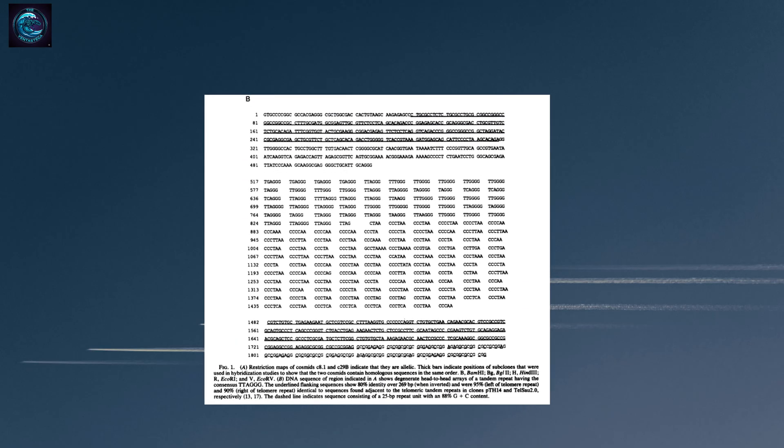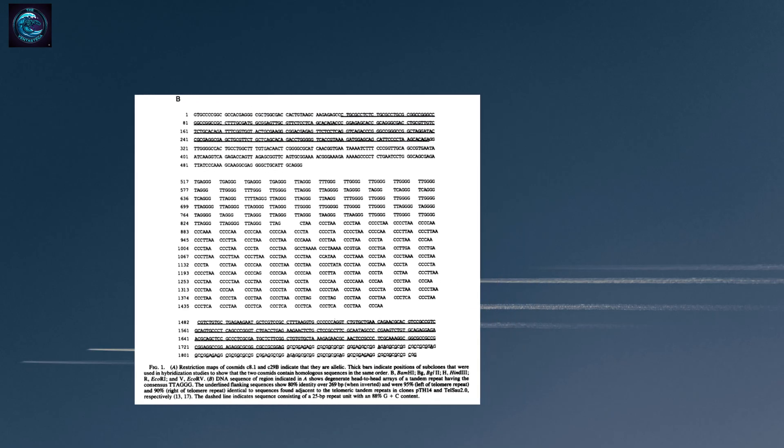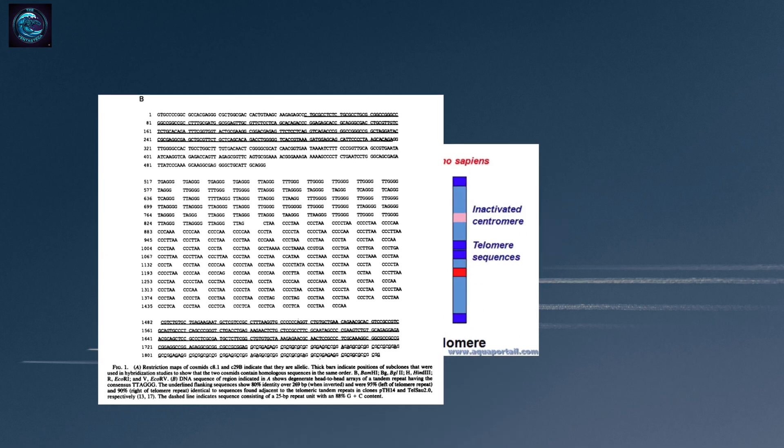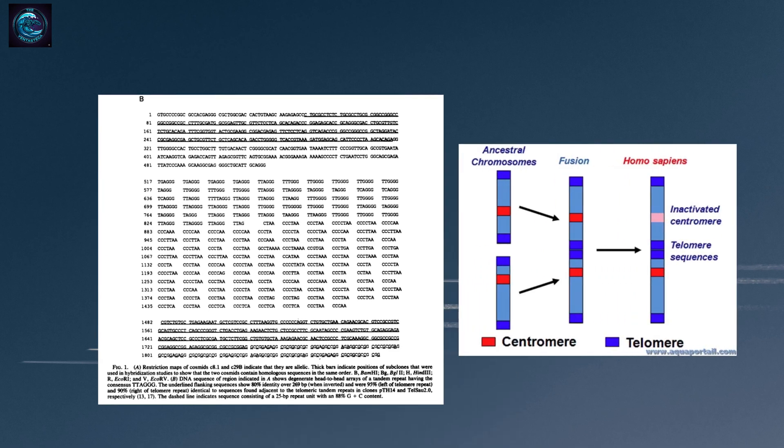Think about what this means. Telomeres in the middle of a chromosome would be like finding a zipper pull in the middle of a jacket. It makes no sense unless that jacket was once two separate jackets sewn together. This is exactly what we'd expect if two chromosomes had fused end-to-end. The telomeres that once protected the ends of two separate chromosomes are now preserved in the middle of chromosome 2, marking the exact fusion point.